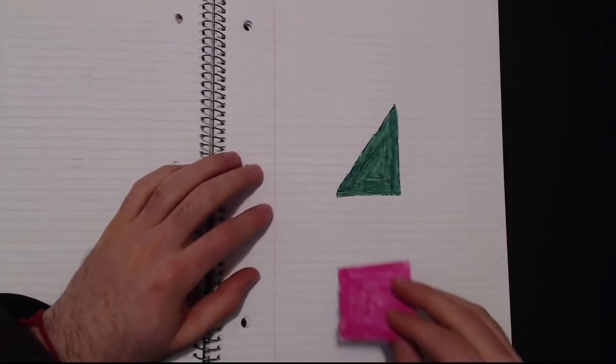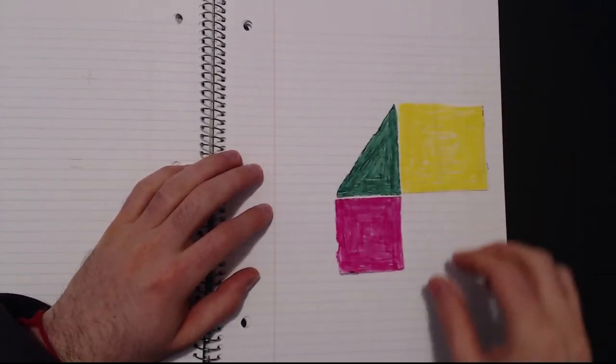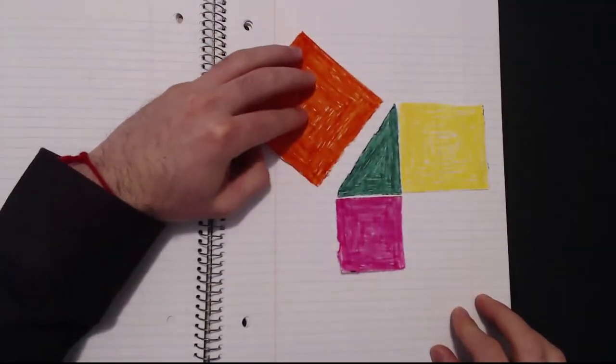Wait, so we have this triangle, we have one square from one side, the other square from the other side, the pink plus the yellow is equal to the orange.